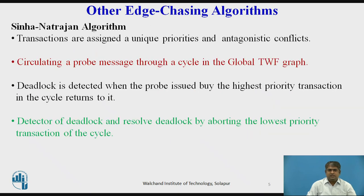In the Sena-Natrajan algorithm, transactions are assigned unique priorities, and an antagonistic conflict is said to occur when a transaction waits for a data object that is blocked by a lower priority transaction. The algorithm initiates deadlock detection only when an antagonistic conflict occurs.